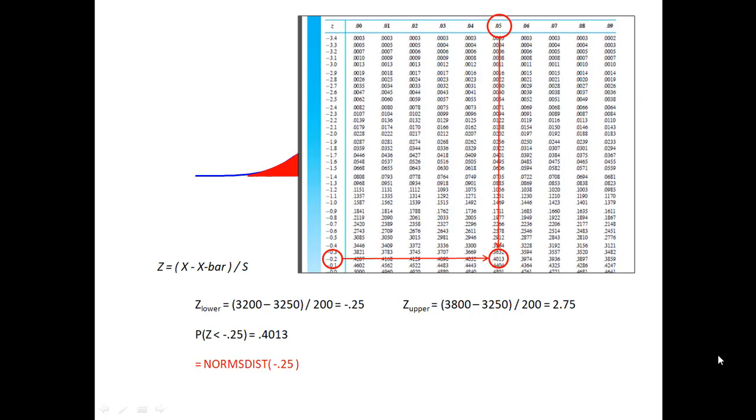I then look up the probabilities for each one. Realistically you're going to use Excel, but I wanted to make sure you can see how to use the standard table in appendix A3 in the textbook. You'll look up the z table and in the case of negative 0.25, we're looking for negative 0.2 in the left column, then use the headings across the top to find the 0.05. The intersection gives us the probability of 0.4013.